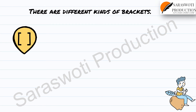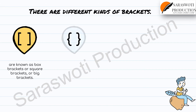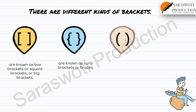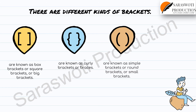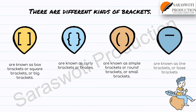These brackets are known as the box bracket, square bracket, or big brackets. These brackets are known as curly brackets or braces. These brackets are known as simple brackets, round brackets, or small brackets. This bracket is known as the line bracket or bar bracket.